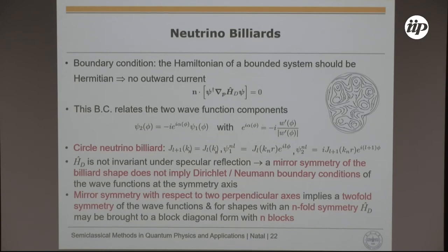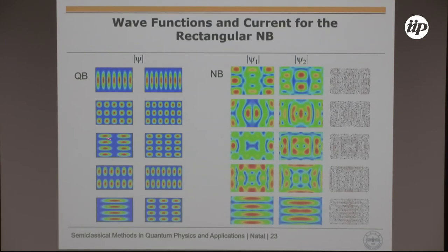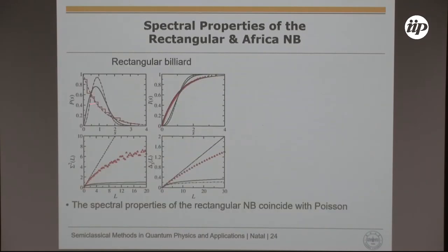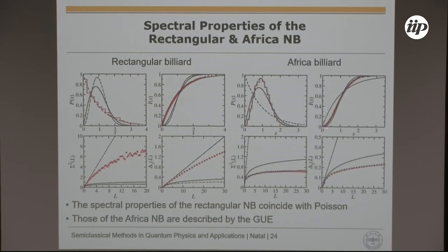To illustrate: the rectangular quantum billiard has a chessboard wave function structure, but the rectangular neutrino billiard wave functions show no such structure and do not satisfy Dirichlet boundary conditions. Despite this, the spectral properties of the rectangular neutrino billiard are still Poisson, here shown for 10,000 eigenvalues — with deviations in long-range correlations that decrease with more eigenvalues. For the Africa neutrino billiard one finds very good agreement with GUE, again for 10,000 eigenvalues.